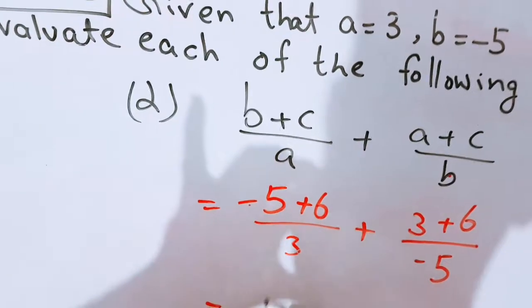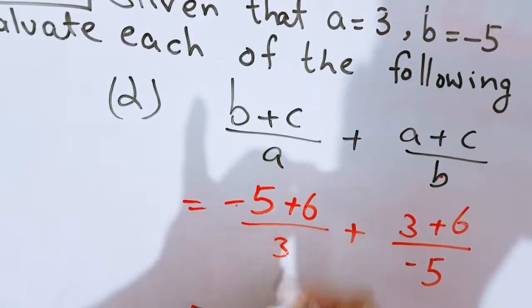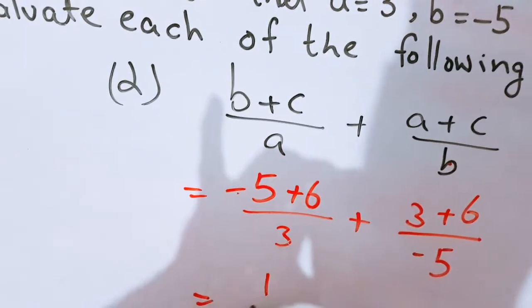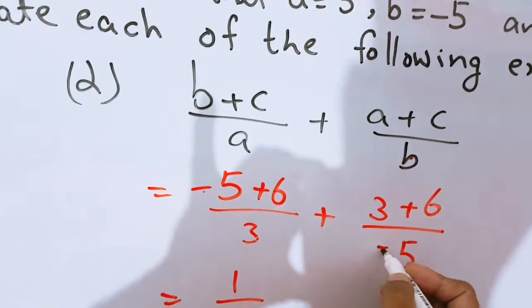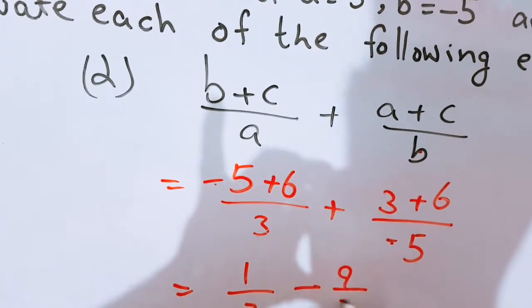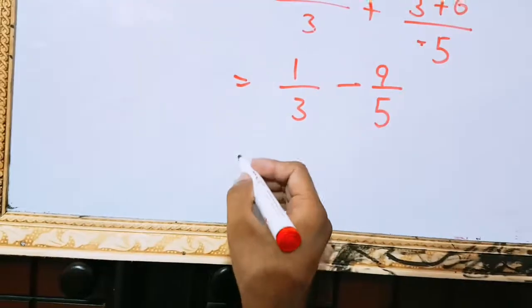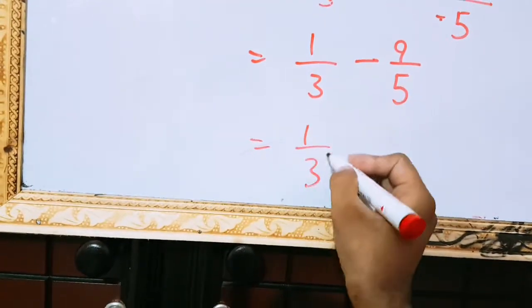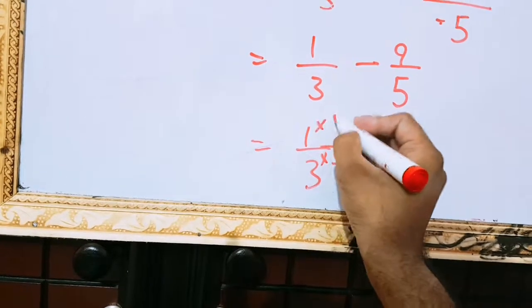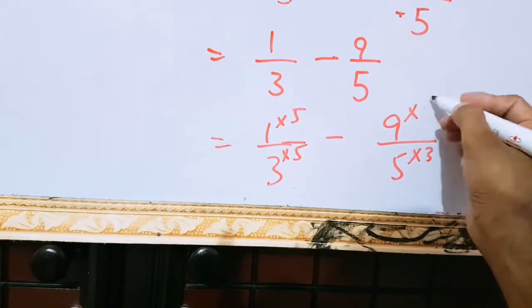Bigger value is 6. Minus plus minus. Bigger value sign will be used. Means no sign will be used. Positive shouldn't be written in the start. 6 minus 5 is 1. Over 3. Minus plus minus. 3 and 6, 9. Over 5. Like the previous question, we shall multiply the denominator 3 with the 5. And it's numerator with the 5 also. And here 5 will be multiplied by 3. It's numerator with also 3.